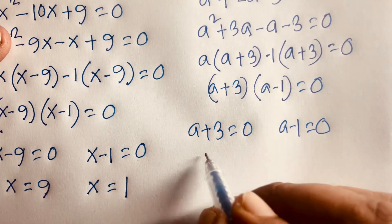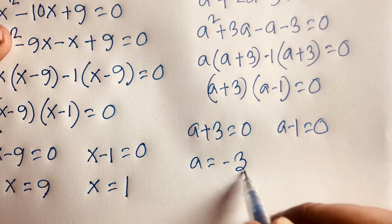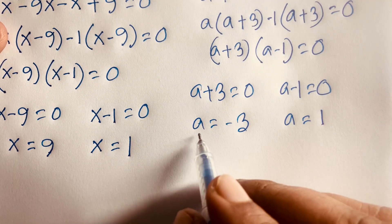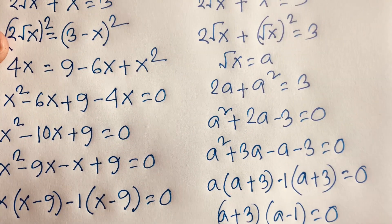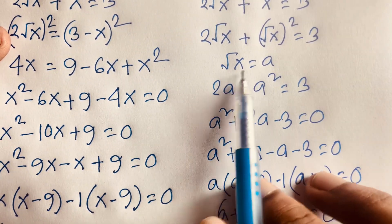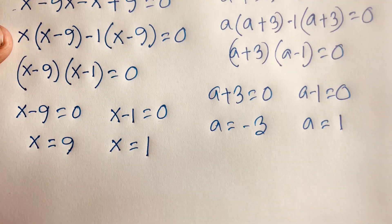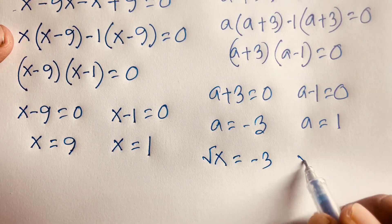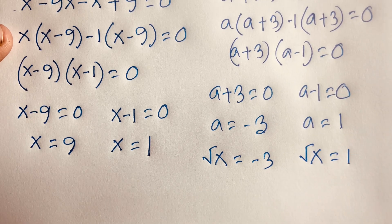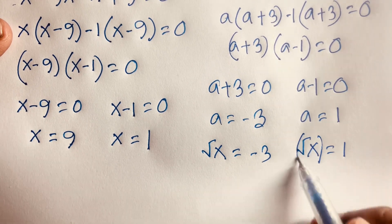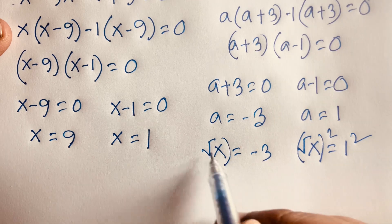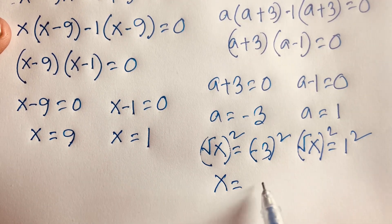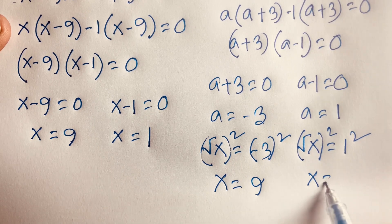Therefore a = -3 or a = 1. Remember that a = √x. So √x = -3 or √x = 1. Squaring both sides gives x = 9 or x = 1.